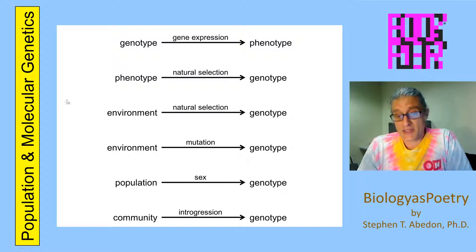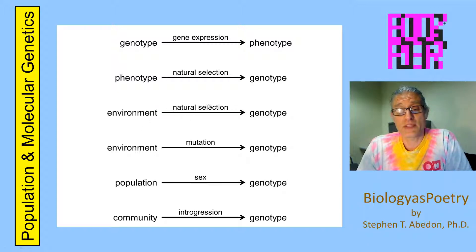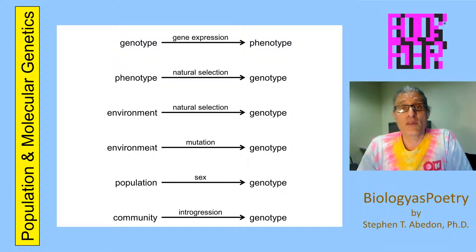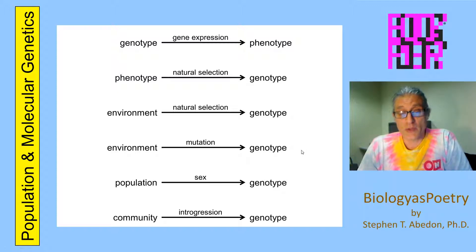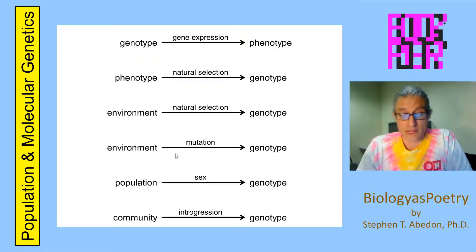This third process is essentially a restatement of the second one. Environment can act upon phenotype in the process of natural selection, resulting in modification of genotype. You can also have environment impacting on genotype more directly in the form of the induction of mutations, so environmental mutagens can increase mutation rates within populations.